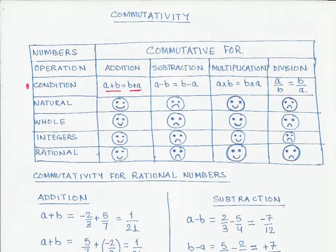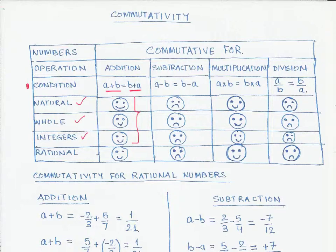We have studied the commutative property for addition for natural numbers, whole numbers, and integers, and we concluded that these three number types follow the commutative property for addition — meaning the order in which you add two numbers doesn't matter. You could add any amount of natural numbers, whole numbers, or integers in any order and still get the same result.